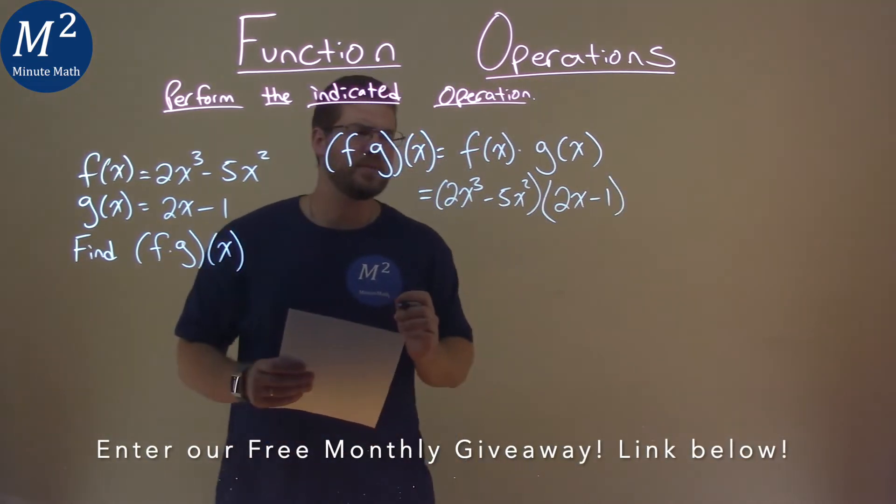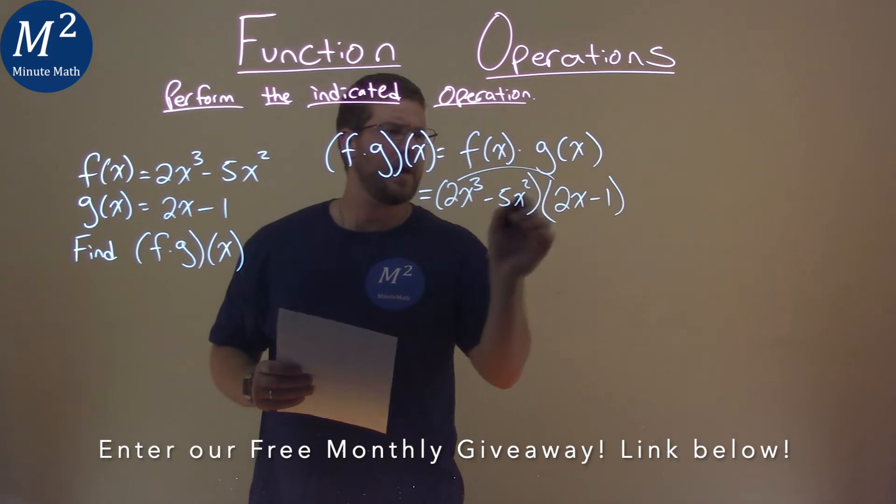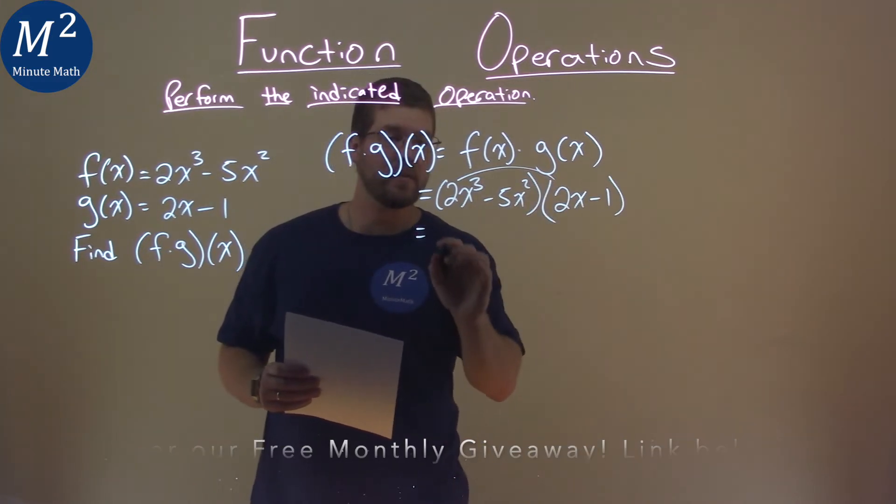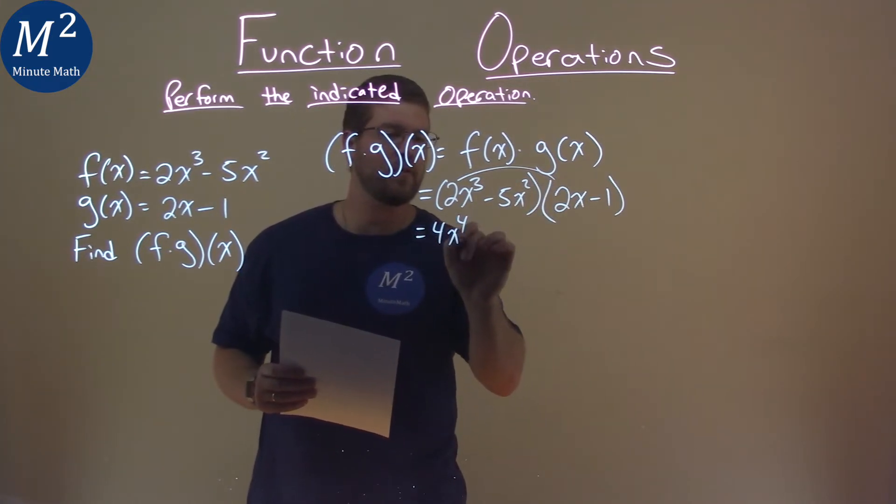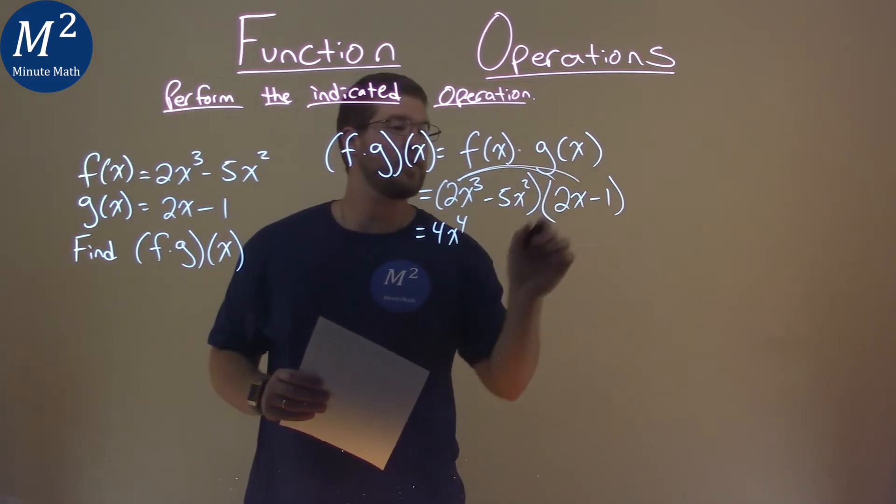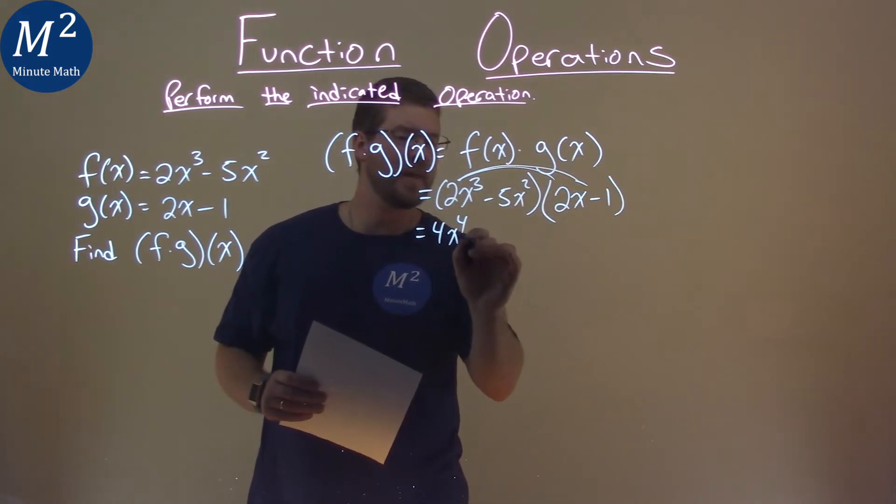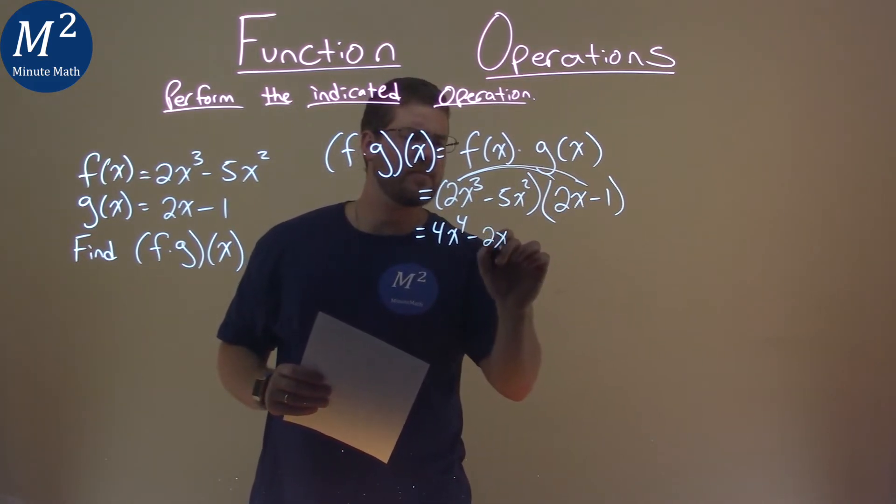Now, we want to FOIL. 2x to the third times 2x is 4x to the fourth power. 2x to the third times a minus 1 is a minus 2x to the third.